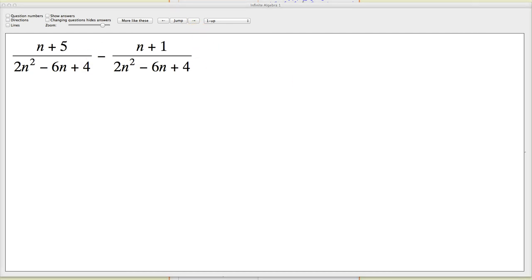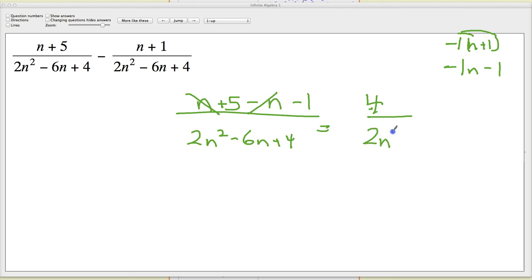Here's another where it looks a little bit more advanced. In this case, I've got that negative one situation again. So I end up with negative one n minus one. So n plus five minus n minus one over two n squared minus six n plus four. So from here, one minus one, so those cancel out. Five minus one is four. Two n squared minus six n plus four.